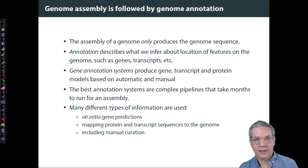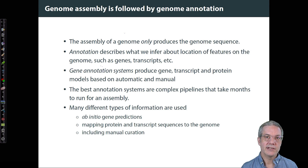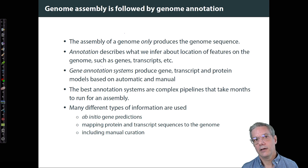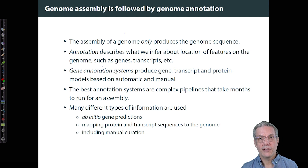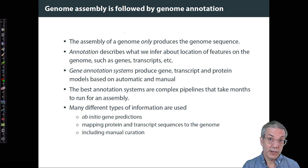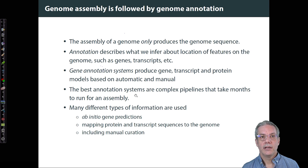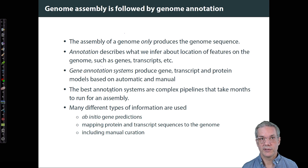After the assembly comes genome annotation. The assembly only produces the sequence, and the annotation provides everything we can say about that sequence — where the features are on the genome, like genes, transcripts, and so on. The annotations are models using both automatic and manual processes. The best systems, like Ensembl, Gencode, and the NCBI system, are complex pipelines that take months to run for a new assembly. For the human assembly, the Ensembl annotation system is estimated to take about four months.